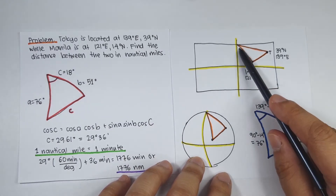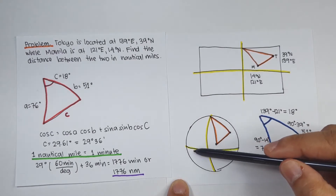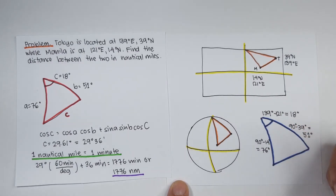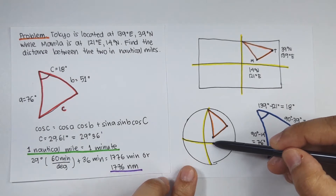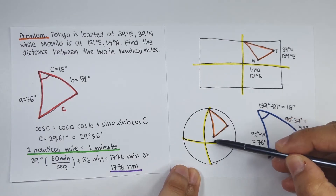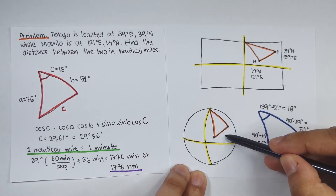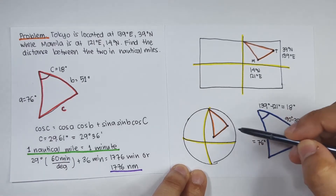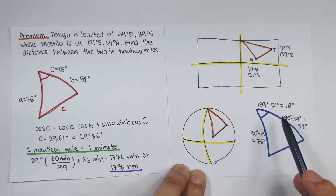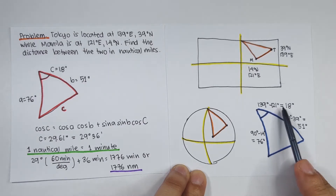Draw a spherical triangle with the north pole at the top. From the equator to the north pole is 90 degrees, so the co-latitude of Manila is 90 minus 14 = 76 degrees, and the co-latitude of Tokyo is 90 minus 39 = 51 degrees. The polar angle equals the difference in longitudes: 139 minus 121 = 18 degrees.